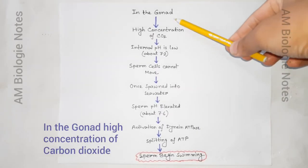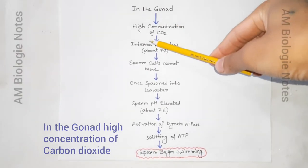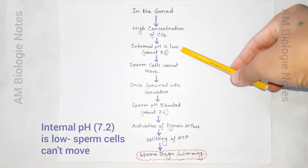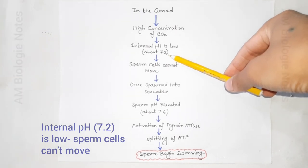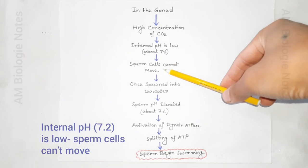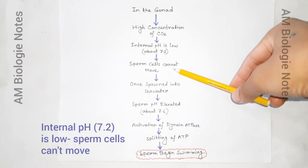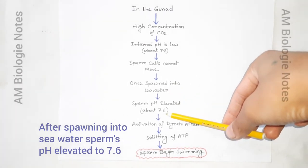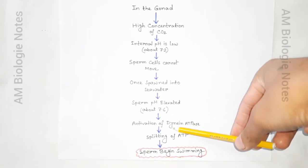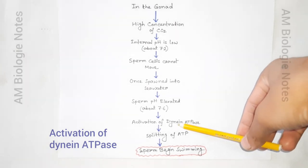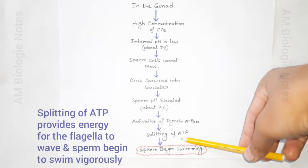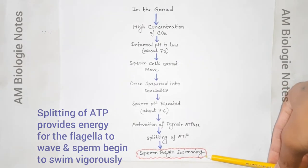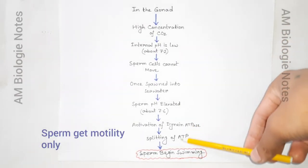Now we will see how the sperm of sea urchins get motility. In the gonad, there is a high concentration of carbon dioxide, so the internal pH of the testes is kept low, about 7.2. At this lower pH, sperm cells cannot move. However, once spawned into seawater, sperm pH is elevated to about 7.6. As a result, the dynein ATPase is activated and splits ATP. The splitting of ATP provides the energy for the flagella to wave, and the sperm begin swimming vigorously. In this way, sperm of sea urchins gain motility.